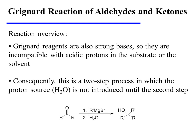Grignard reagents are also strong bases, so they are incompatible with acidic protons in the substrate or the solvent. Consequently, this is a two-step process in which the proton source — often water or dilute aqueous acid — is not introduced until the second step of the reaction.